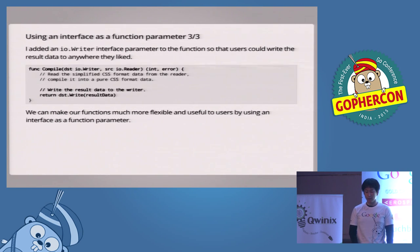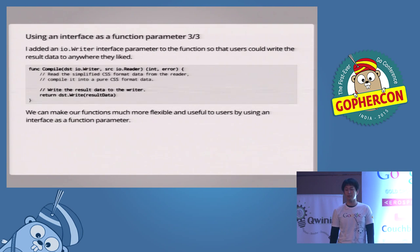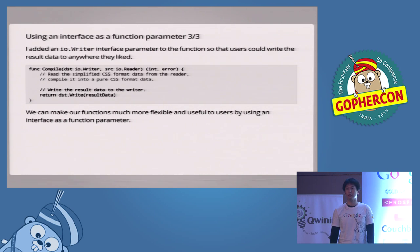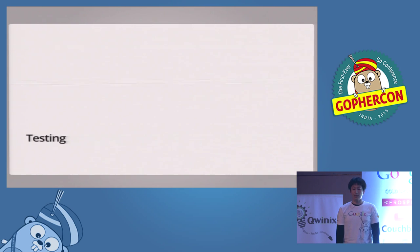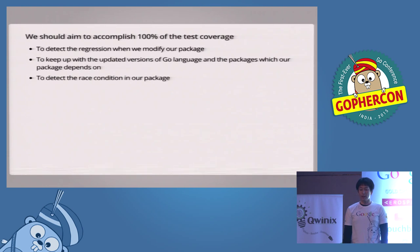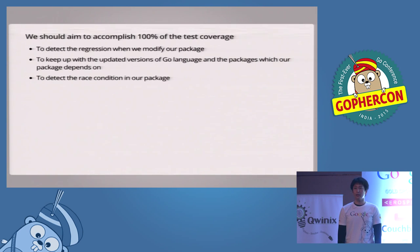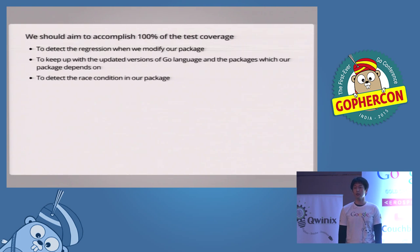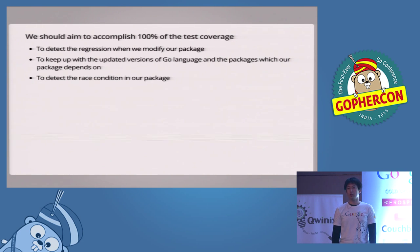Finally, I'd like to talk about testing. Testing is necessary to maintain and enhance Go packages effectively and continuously. Above all, aiming to accomplish 100% test coverage is important. There are three main advantages: firstly, we can detect regressions when we modify our package; secondly, we can keep up with the updated versions of Go and the packages which our package depends on; and lastly, we can detect race conditions in a package. Go's test command has the race option which detects race conditions, and we can easily check if there is a race condition in a package.